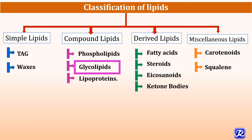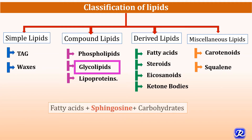Glycolipids are the compound lipids which are made up of fatty acids. The alcohol present in the glycolipids is sphingosine, along with the carbohydrates. So glycolipids consist of fatty acids, sphingosine, and carbohydrates.